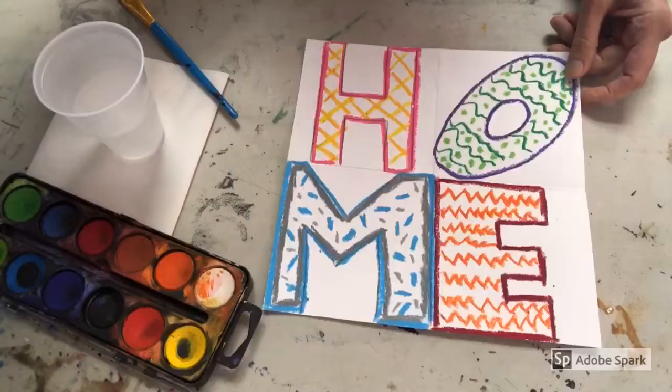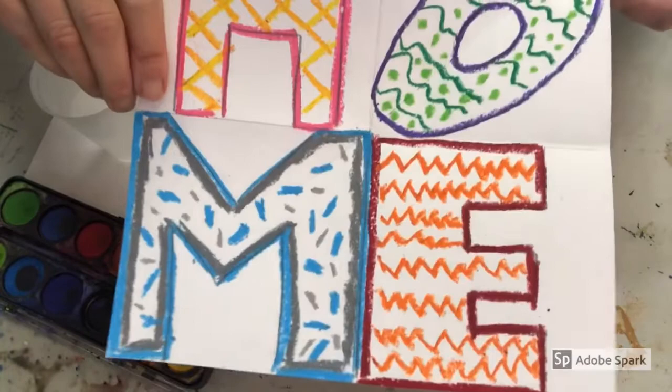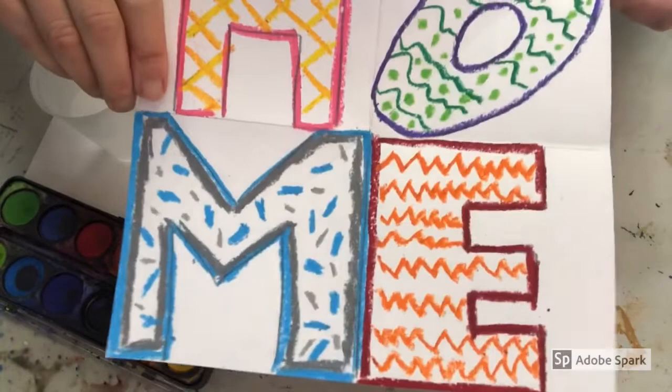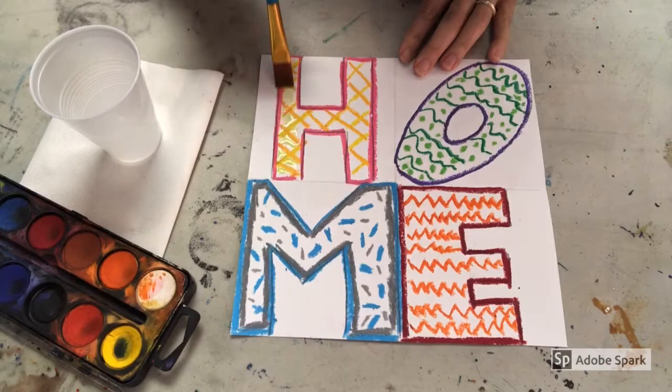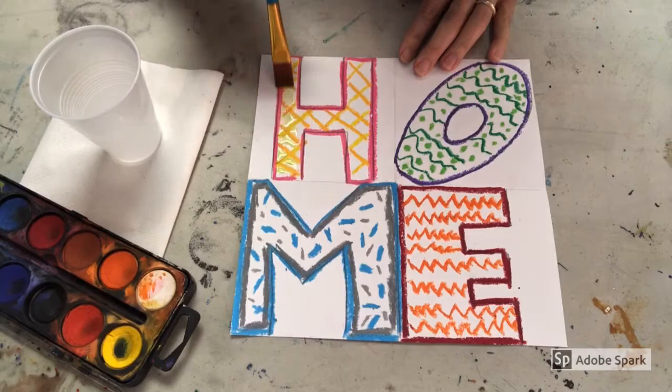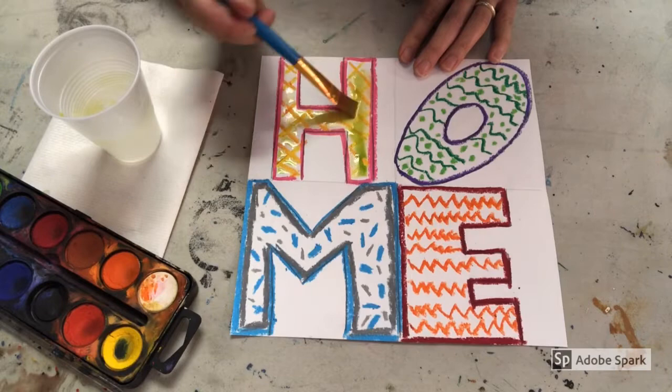I finished outlining my letters and adding some interesting patterns inside each bubble letter. Now we're going to use some watercolor paint to do a watercolor wash. This is called a wax resist or a crayon resist, and you know I love a good resist. It's almost like magic. When you go over the oil or the wax, the pattern still shines through but creates a really nice layered effect.